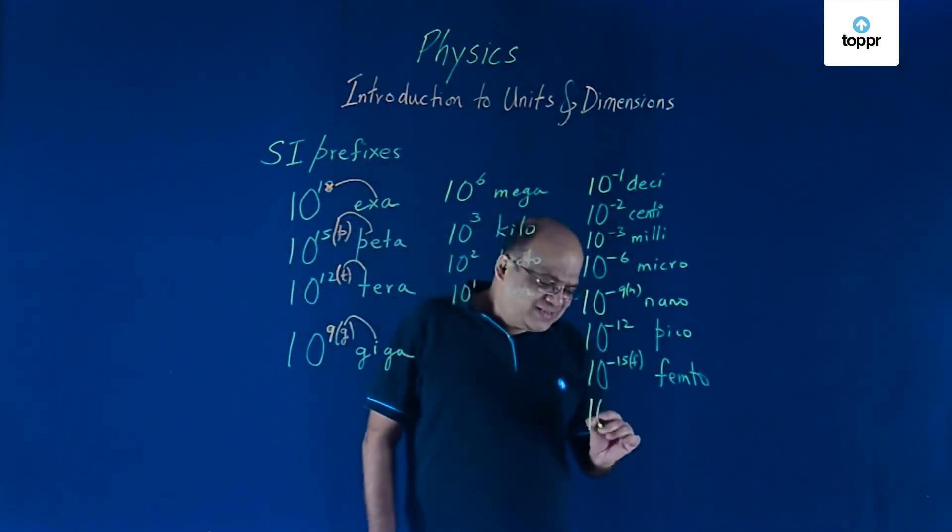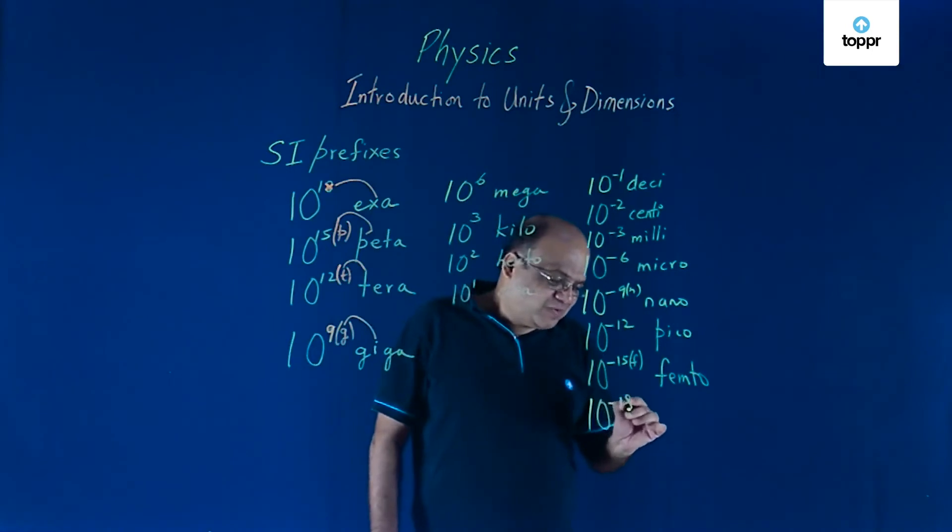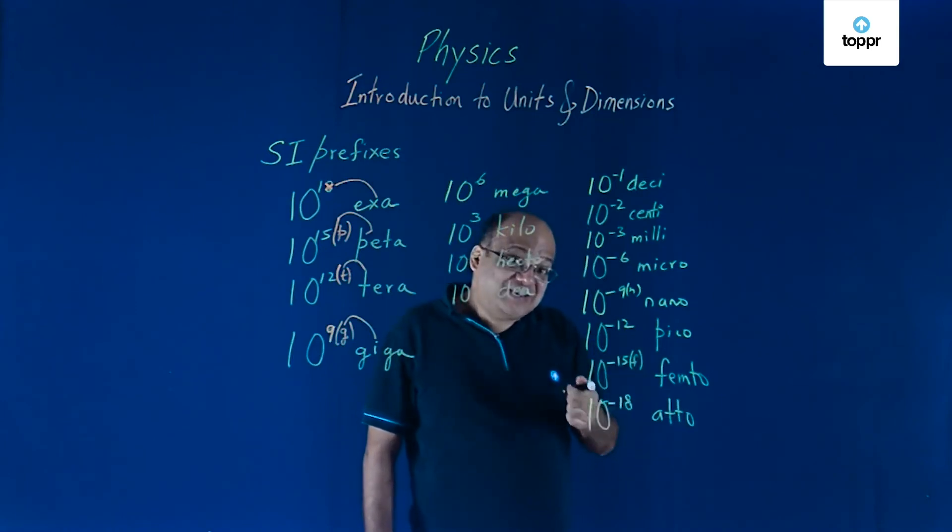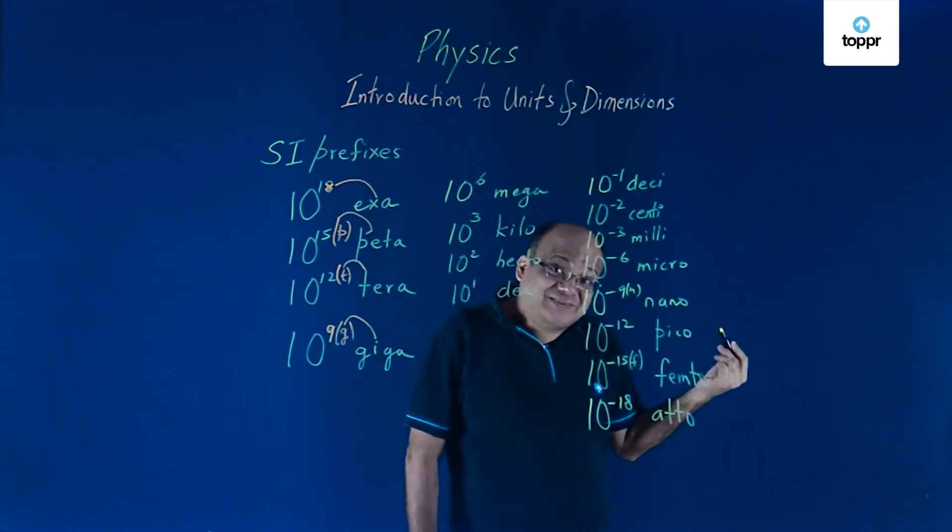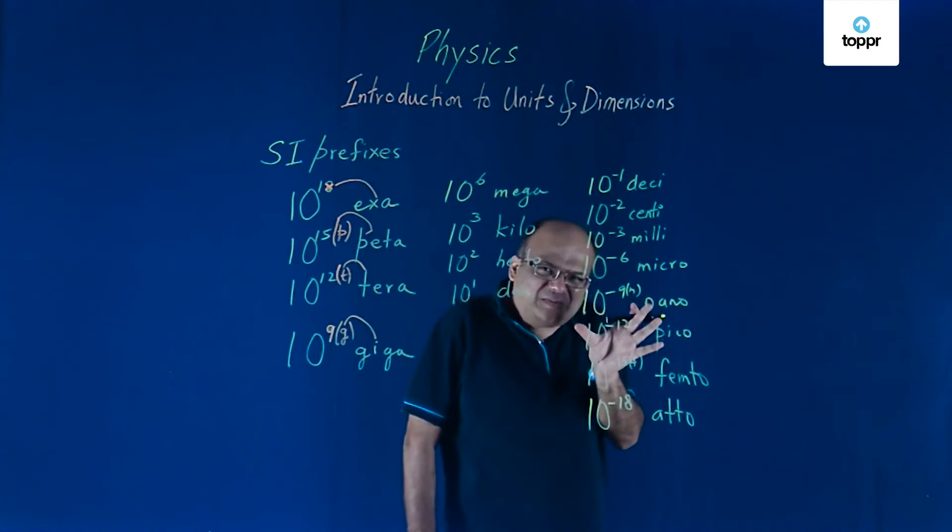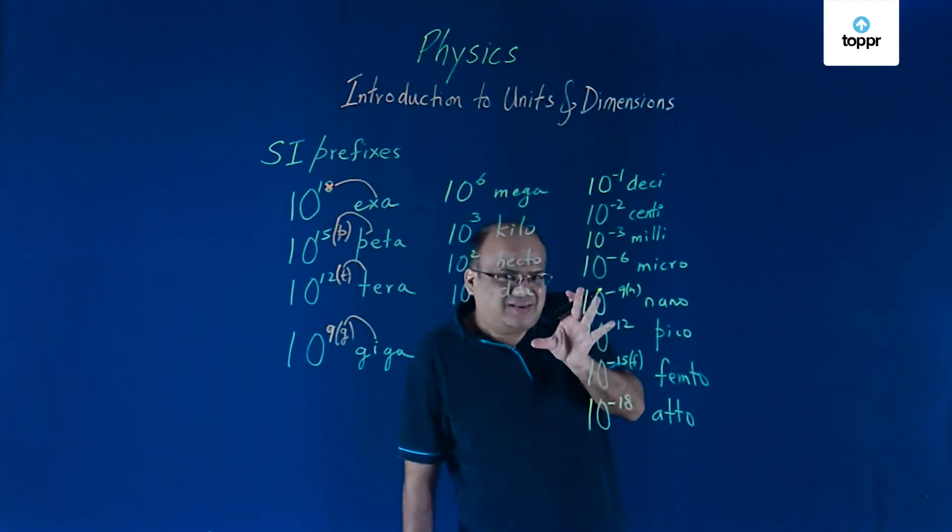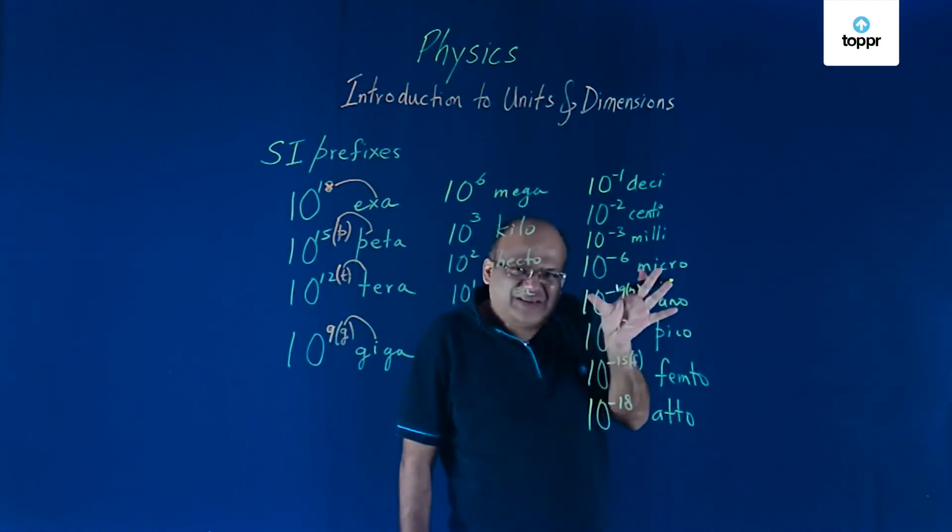Minus 18, very very small, that we call it atto. Size of the nucleus is measured in femtometre. Wavelength of light is measured in nanometre. Size of an atom we can measure in nanometre, we can measure in angstrom.